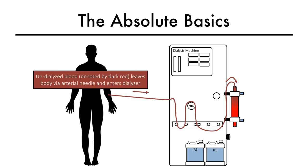Undialyzed blood, denoted by dark red, leaves the body via the arterial needle and enters the dialyzer at the arterial end.